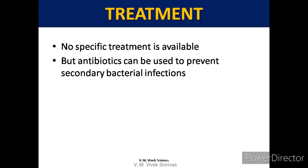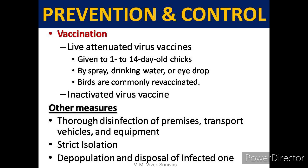No specific antiviral drugs are available for this infection; only antibiotics can be used to prevent secondary bacterial infections. For prevention and control, vaccination and other measures are followed. Both attenuated and inactivated virus vaccines are available. Attenuated vaccines are given to 1- to 14-day-old chicks by spray, drinking water, or eyedrop, and birds are commonly revaccinated. Other measures include thorough disinfection of premises, transport vehicles, and equipment, as well as strict isolation, depopulation, and disposal of infected birds.